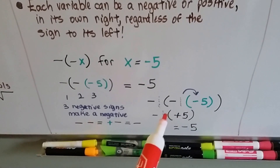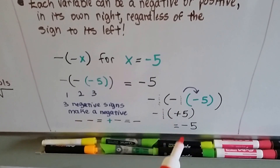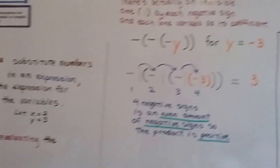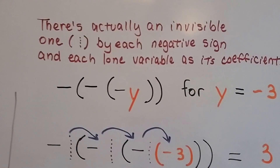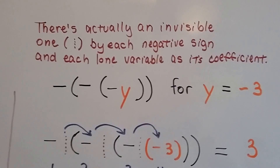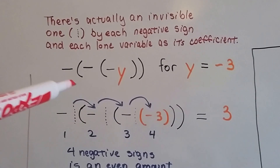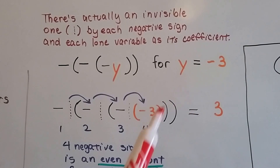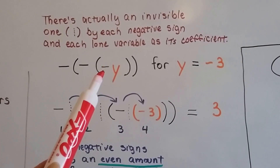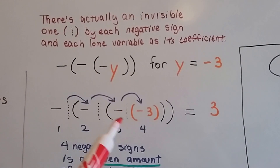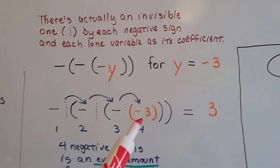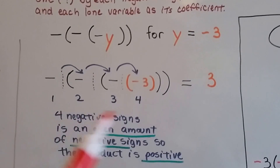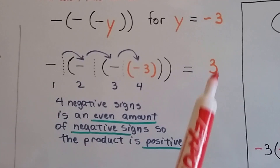So we're doing negative 1 times positive 5, and because they're unlike signs, it gives us a negative. Remember there's an invisible 1 by each negative sign. So there's one here, and one here. Because y equals negative 3 on its own, that has nothing to do with the negative sign — that negative sign ends up with its negative 1, and we plug in negative 3 for y. We count the negative signs: 1, 2, 3, 4. That's an even amount of negative signs, so our answer is going to be positive.